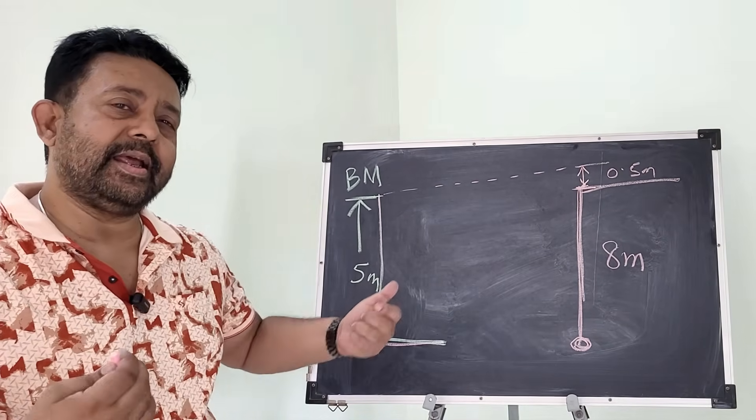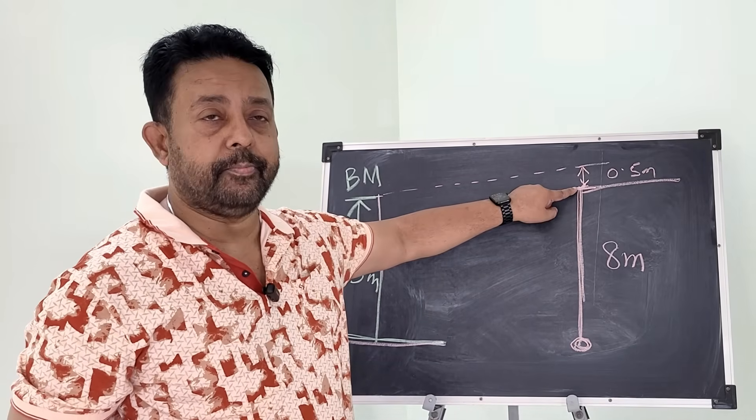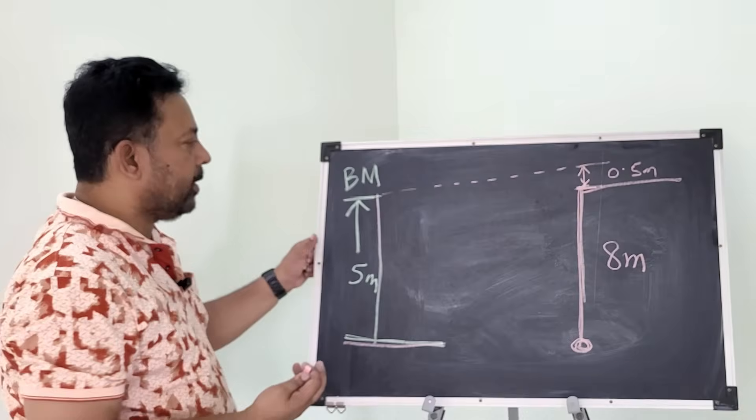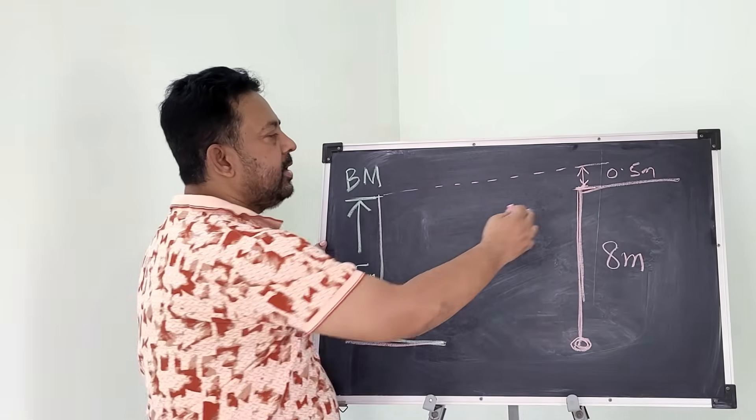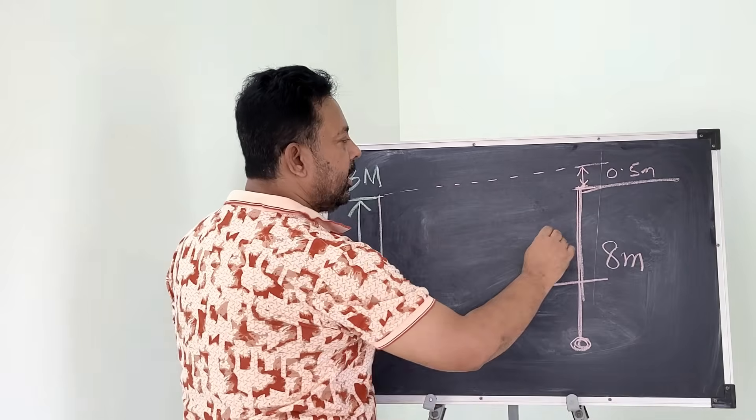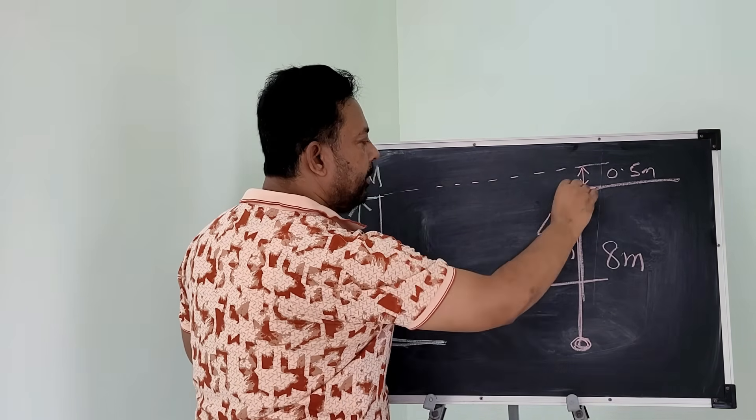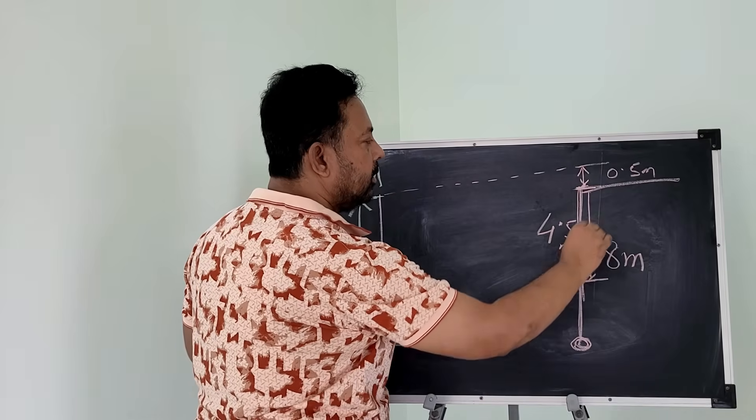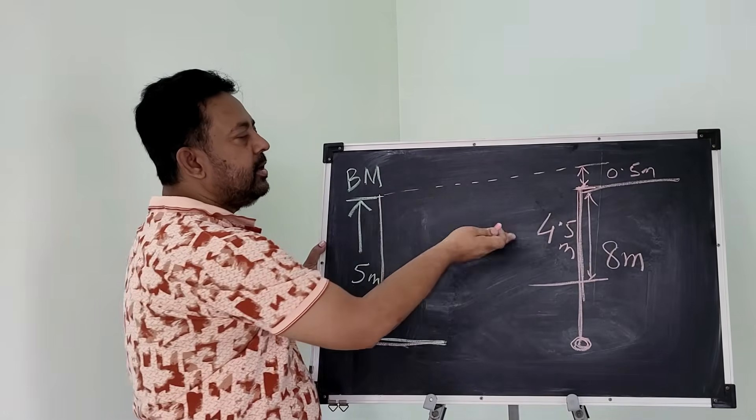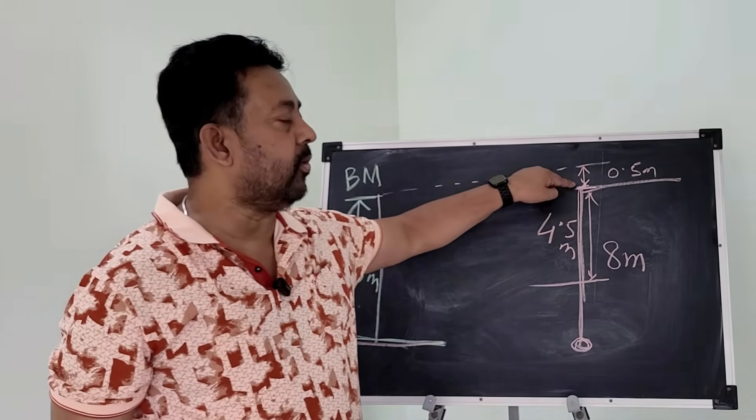Now with all this data I can calculate where is my datum from this jetty point. So I can see this 5 meters, it is 0.5 meter above. So my datum is going to be somewhere here, 4.5 meters below this jetty point, right. This 5 meters, it is above half a meter. Simple mathematics, 4.5 meters from this jetty point.